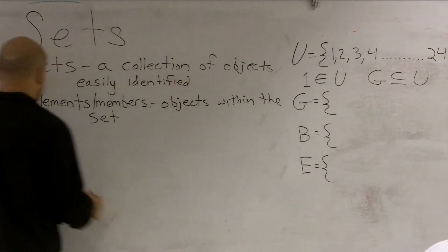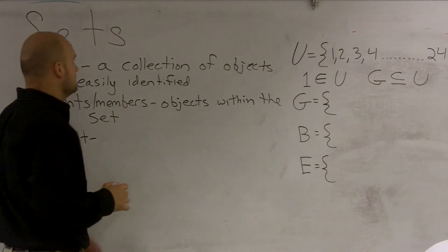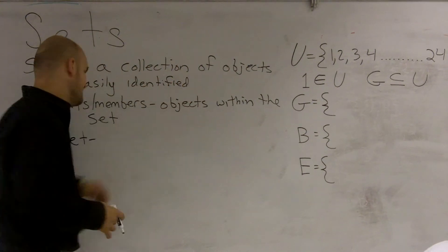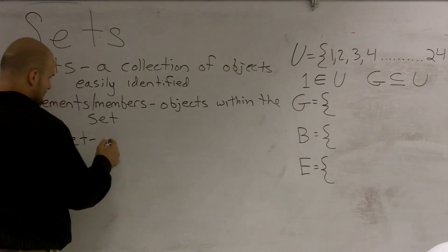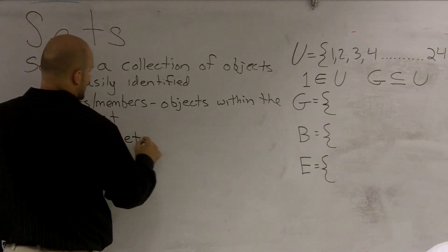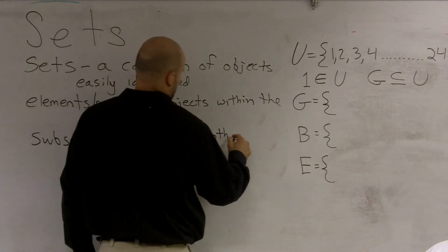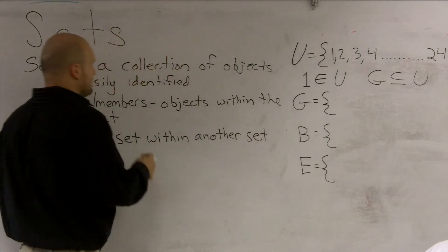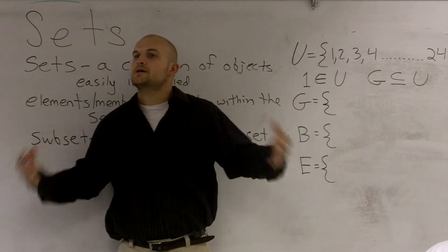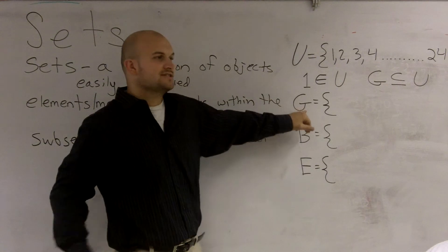Now, the next thing is we have a subset. And all a subset is, is just another collection of objects. It's just a set of another set. So, a subset is a set within another set. Pretty much, you have the collection of objects. So, now what I'm going to do is I'm going to go ahead and make a little subgroup. You guys are all here, you all are 1 through 24. Now, I'm going to need your help, though.